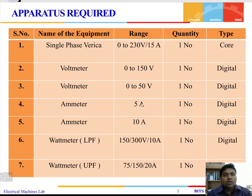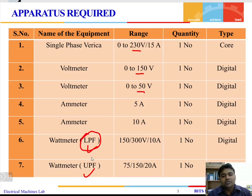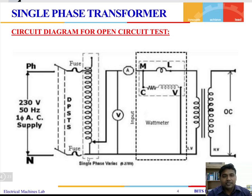For this experiment we require some apparatus: a variac in the range of 0 to 230 volt 15 ampere, a voltmeter, ammeter, and two types of wattmeters — one is a low power factor (LPF) wattmeter and the other is a unity power factor (UPF) wattmeter — for conducting two different tests: the open circuit test and the short circuit test.